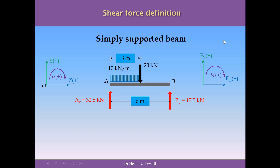Simple supported beams are beams that are restricted at one extreme by a pin support and at the other extreme by a roller. We have here the results of the calculation of reactions from a previous example, so we have all the elements necessary to determine the different values for the shear forces of this beam.